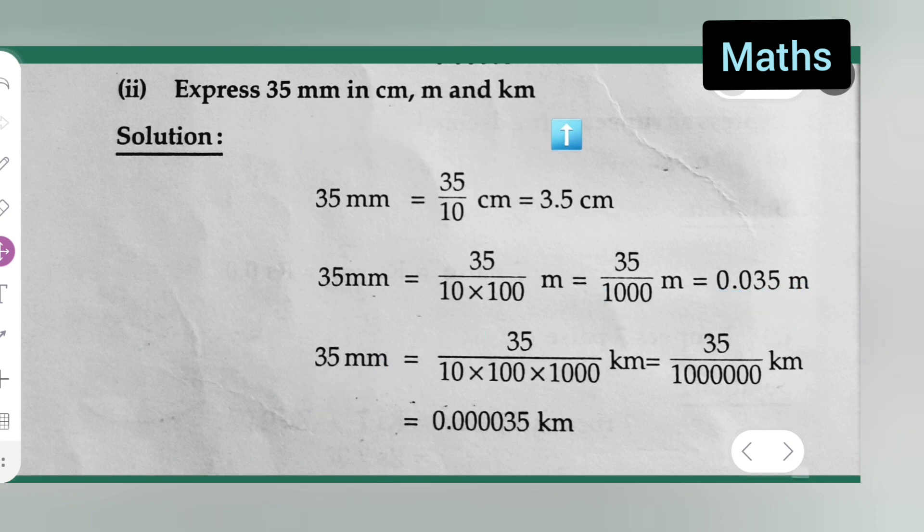35 millimeters equals 35 divided by 10 multiplied by 100 multiplied by 1000 kilometers, which equals 35 divided by 1,000,000 kilometers.